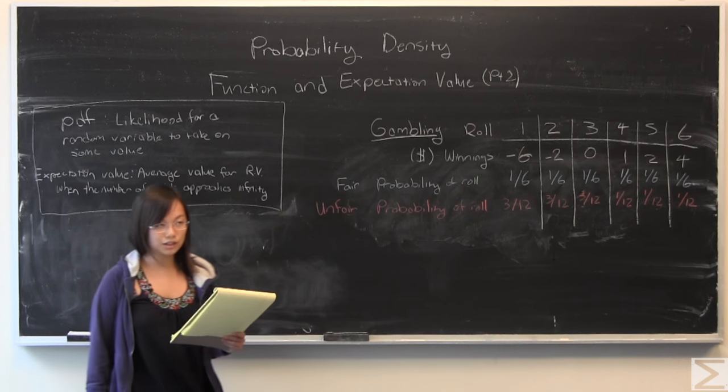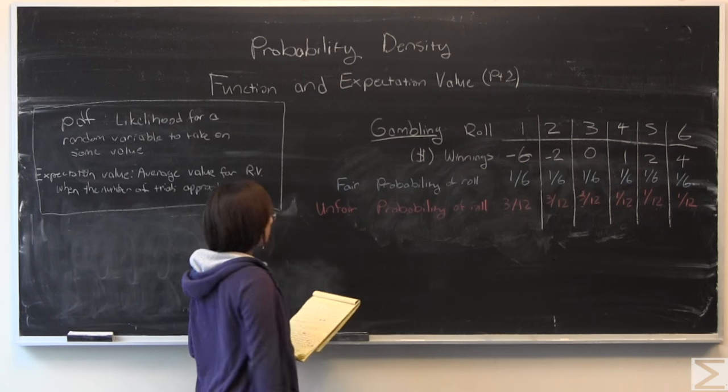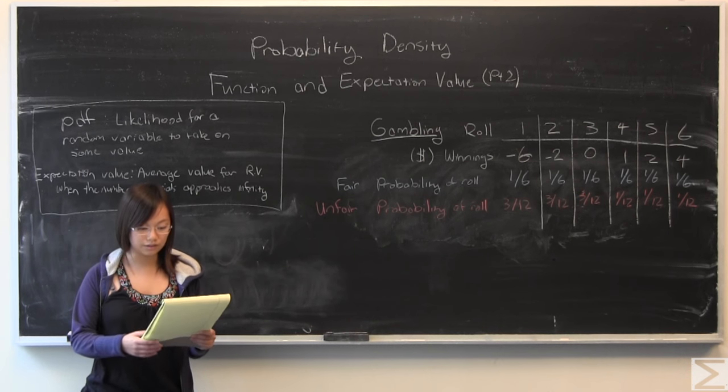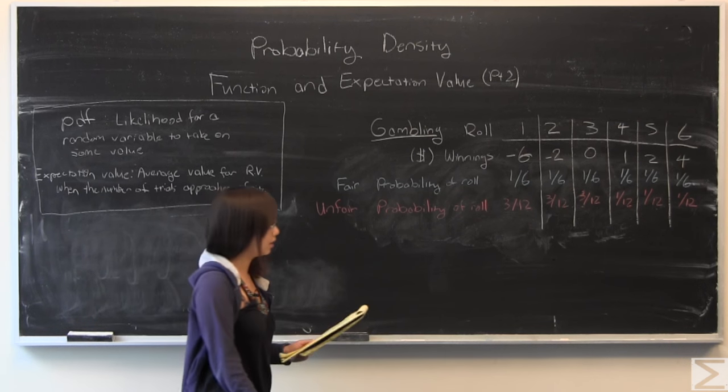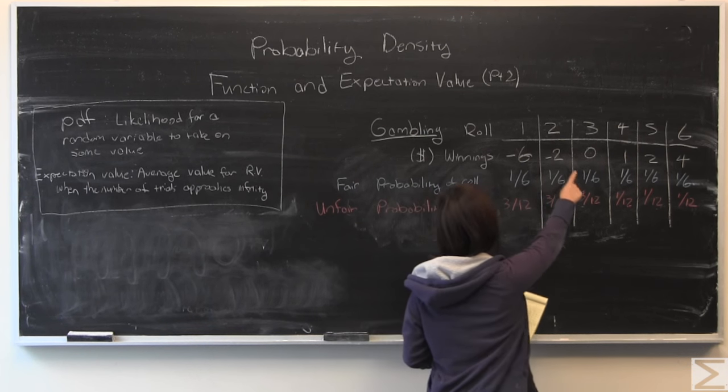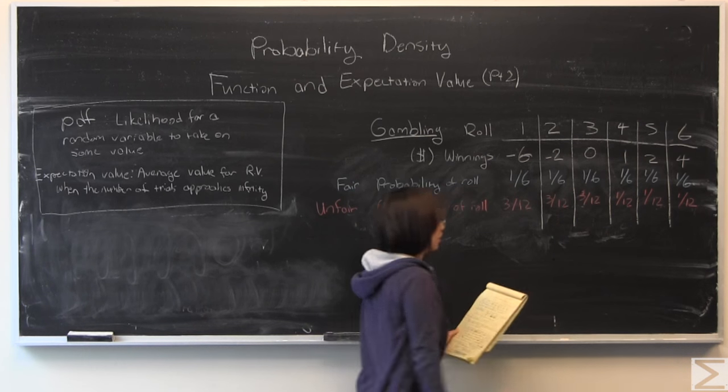I'm going to start with the discrete example. Very simple gambling game. You roll a die, and depending on what you get, you earn some number of dollars. If you roll a one, you lose $6. Two, you lose $2. Three, you gain nothing. Four, you gain $1. Five, you gain $2. Six, you gain $4.